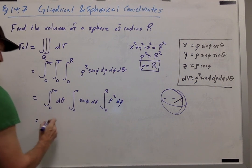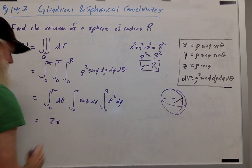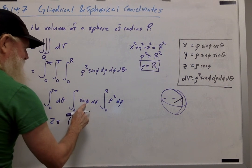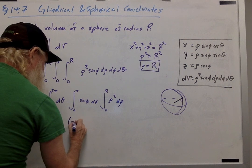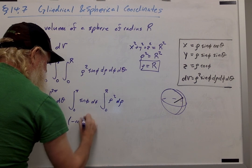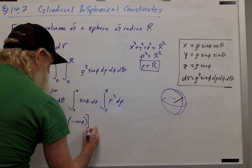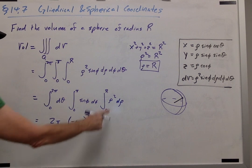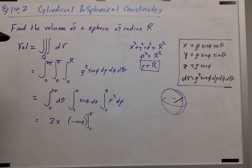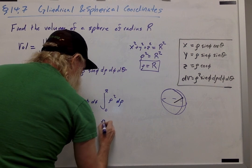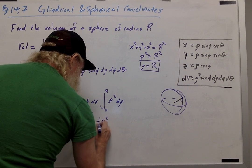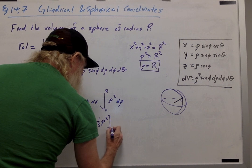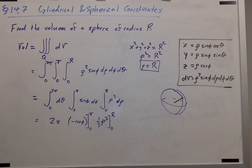The integral from 0 to 2 pi of d theta is just 2 pi. The anti-derivative of sin phi is negative cosine phi, which I'll be taking from phi equals 0 to phi equals pi. And the anti-derivative of rho squared is rho cubed over 3. And I'll take that from rho equals 0 to rho equals R.